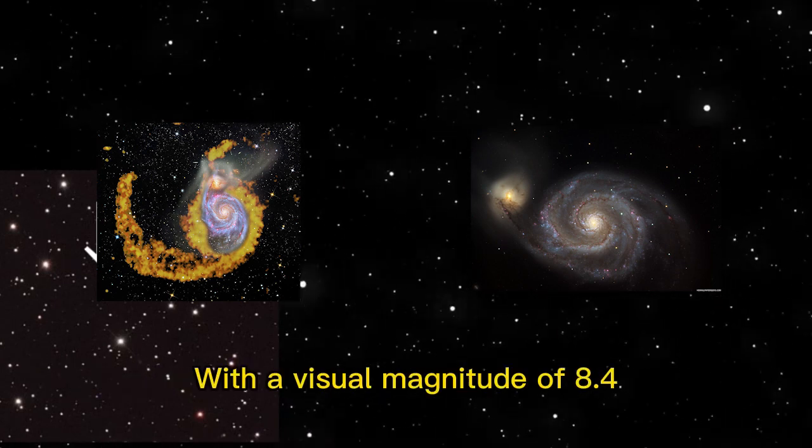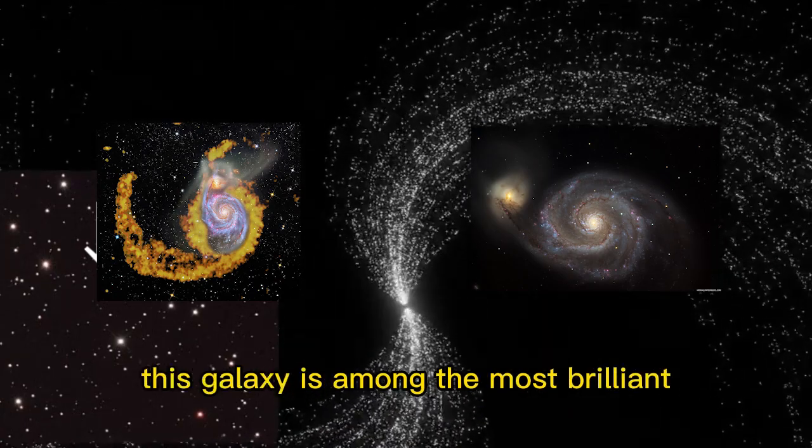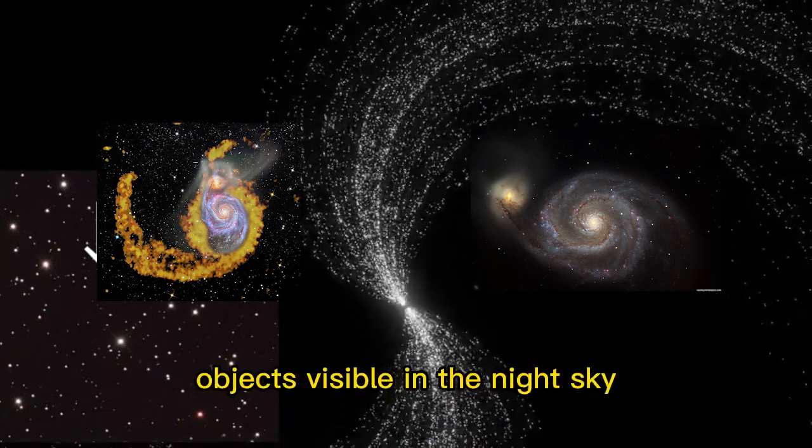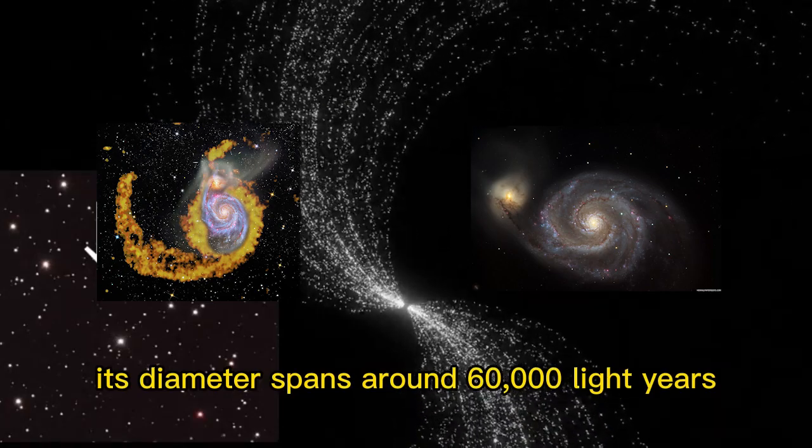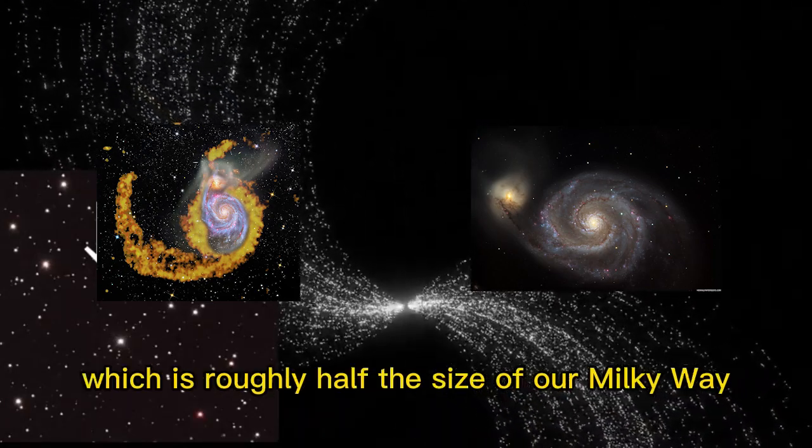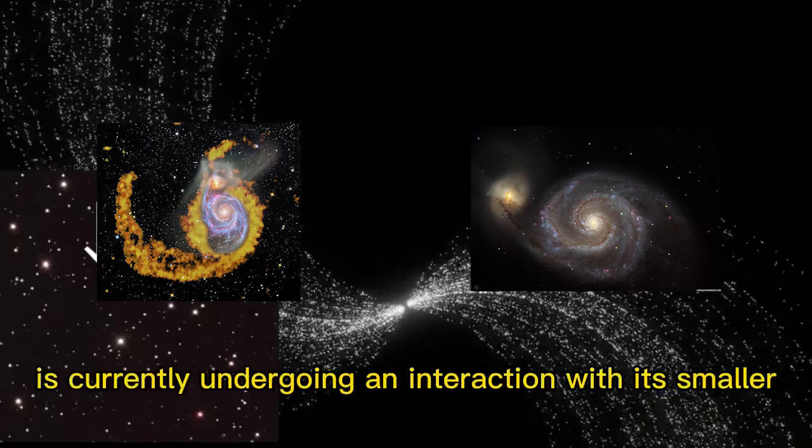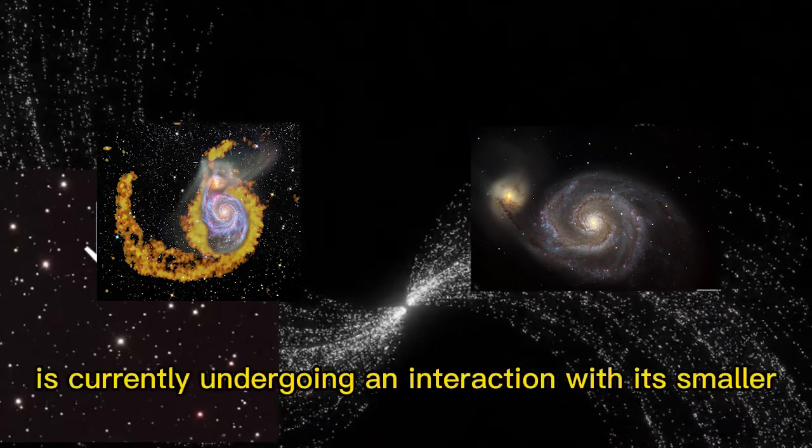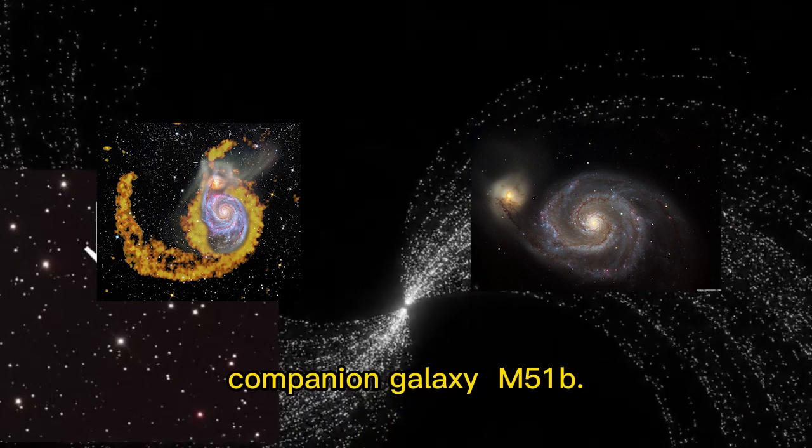With a visual magnitude of 8.4, this galaxy is among the most brilliant objects visible in the night sky. Its diameter spans around 60,000 light years, which is roughly half the size of our Milky Way. The Whirlpool Galaxy is currently undergoing an interaction with its smaller companion galaxy, M51b.